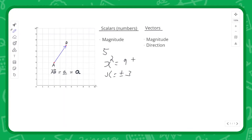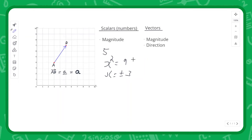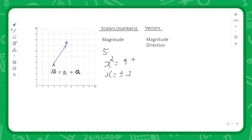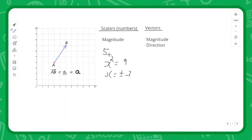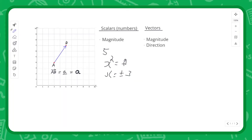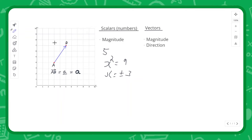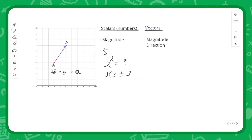A vector is an entirely different mathematical object that you've never seen before. It has both a magnitude, a size like a number, but it also has a direction. Numbers don't have directions — you could count the plus and minus as a direction, but vectors have a 360-degree direction. They can be in any direction.